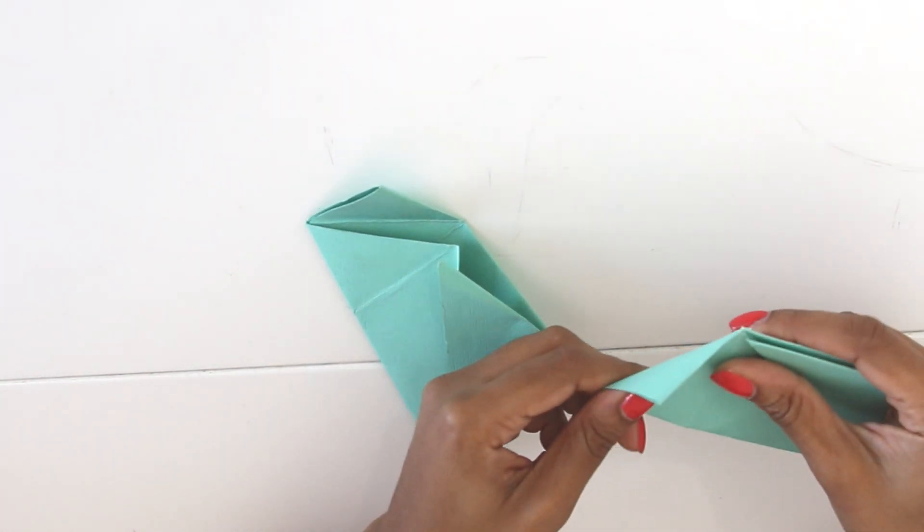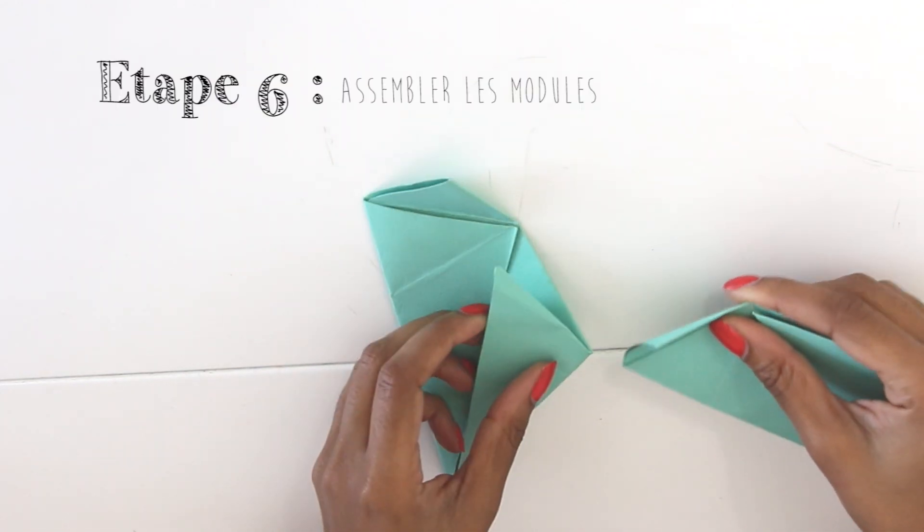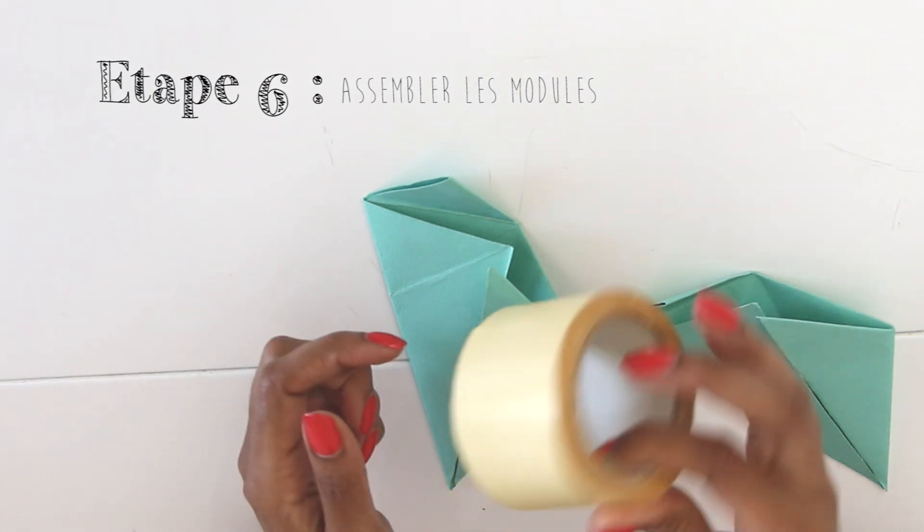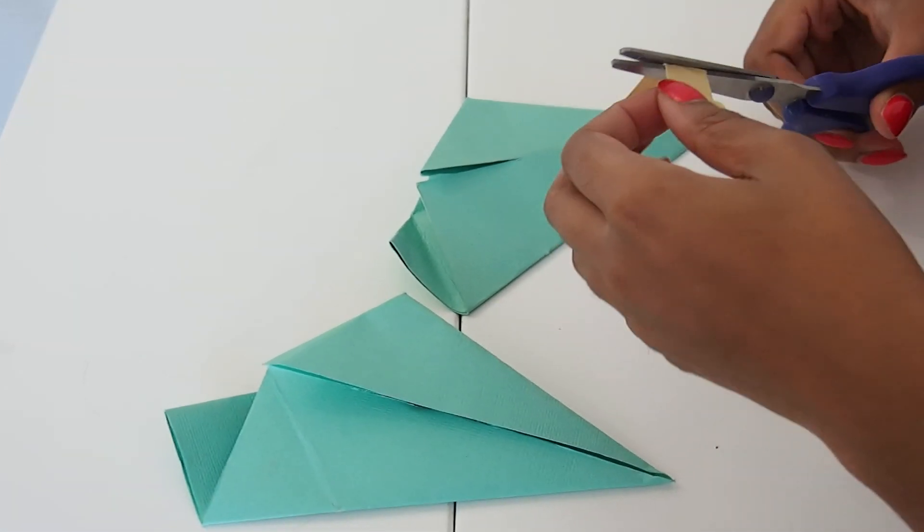Et maintenant on peut passer à l'assemblage. Donc pour bien fixer tous les modules ensemble, j'ai préféré utiliser du scotch double face.